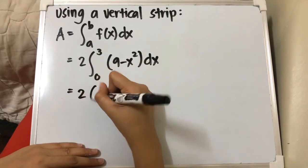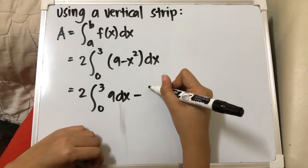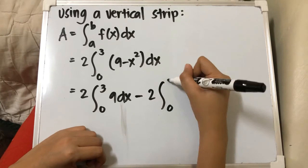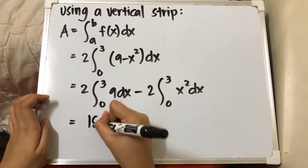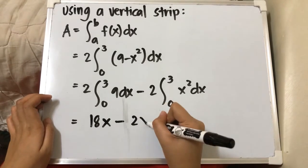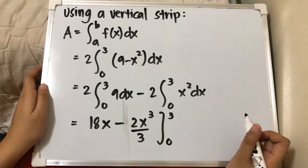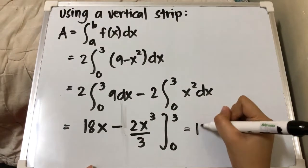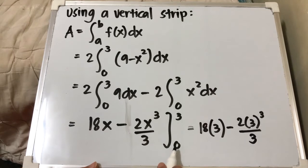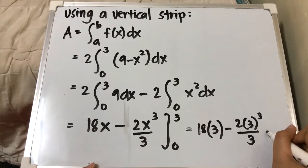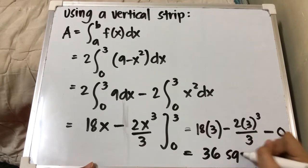Integrating: 2 times 9 equals 18, so we have 18x minus 2 times x³ over 3, evaluated from 0 to 3. Substituting the upper limit: 18 times 3 minus 2 times 3³ over 3. Since substituting 0 gives 0, we just subtract 0. Calculating this, it is equivalent to 36 square units.